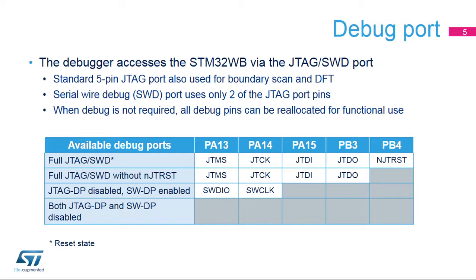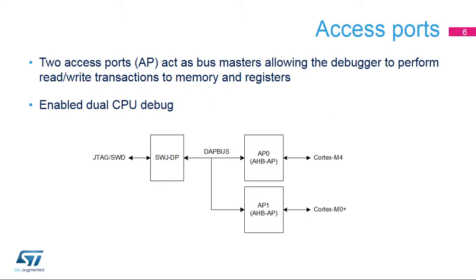ST-Link and most third-party debug adapters, for example U-Link, support Serial Wire Debug. Access port AP-0 allows access to the debug and trace features integrated in the Cortex-M4 processor core via its internal AHB bus as well as to the DBG-MCU. Access port AP-1 allows access to the debug and trace features integrated in the Cortex-M0 Plus processor core via its internal AHB bus. The single access ports enable dual-CPU debugging.